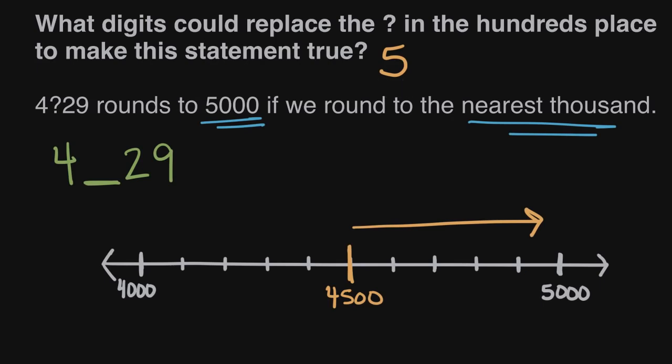And then we know 4,529 works, that's big enough, so anything bigger will only get closer to 5,000. Anything bigger than five in the hundreds place will only move us closer, farther to the right. So any digit five or greater would work here, would round up to 5,000. So the digits that are five or greater are five, and then six, seven, eight, and nine. Those are the possible digits that we could fill into our hundreds place so that our number rounds to 5,000 as its nearest thousand. The solutions are five, six, seven, eight, and nine.